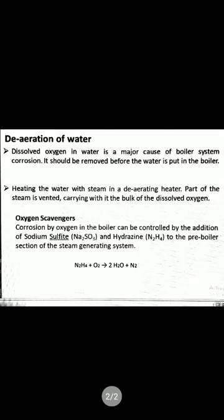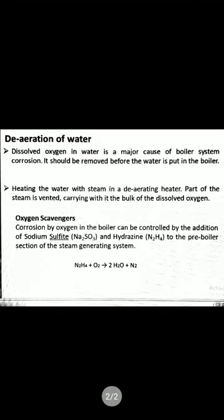The last process is deaeration of water. Dissolved oxygen in water is a major cause of boiler system corrosion and should be removed before the water is put into the boiler. Heating the water with steam in a deaerating heater, part of the steam is vented, carrying with it the bulk of the dissolved oxygen. Corrosion by oxygen in the boiler can be controlled by the addition of sodium sulfite and hydrazine to the pre-boiler section of the steam generating system. The reaction is: N2H4 + O2 → 2H2O + N2.